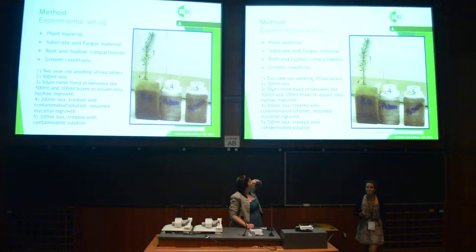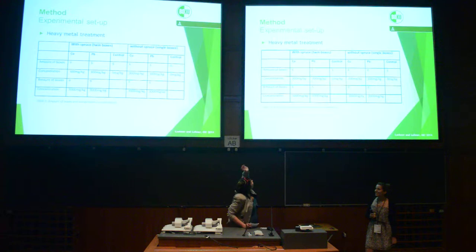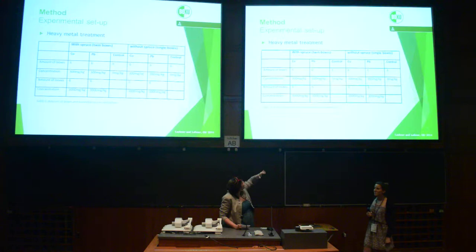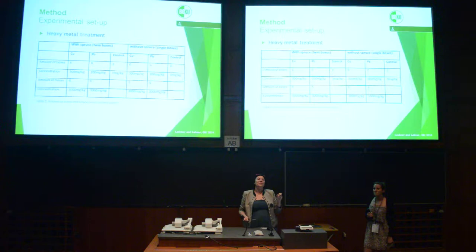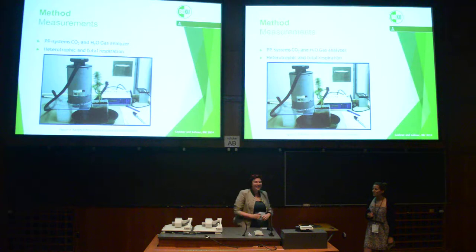Number five is also a polluted box, so you can differentiate between heterotrophic and total respiration. You can see the heavy metal treatments with spruce and without spruce. We had six of each, and we had different concentrations of 300 and 3,000 milligrams per kilogram humus of copper and lead.